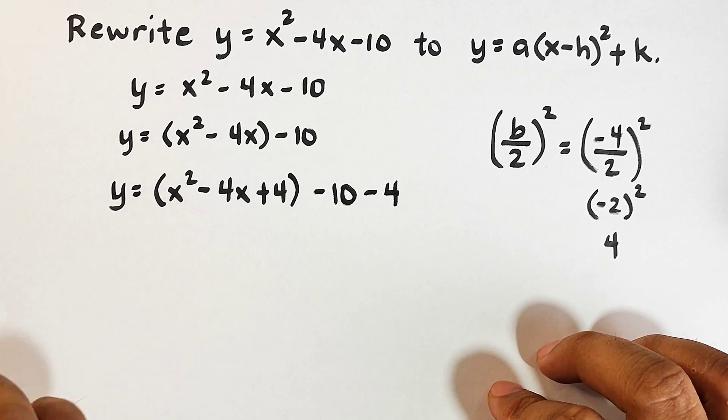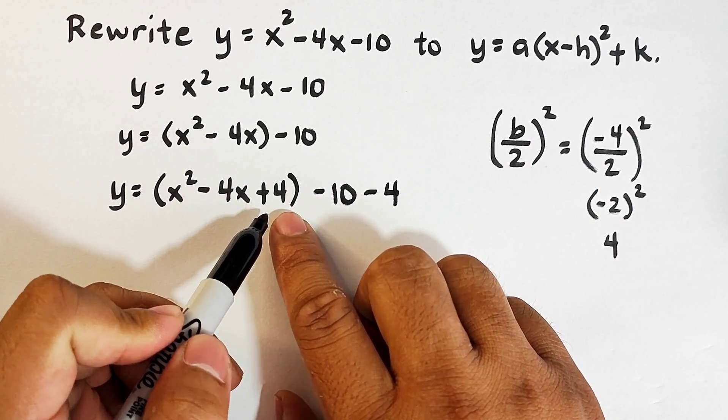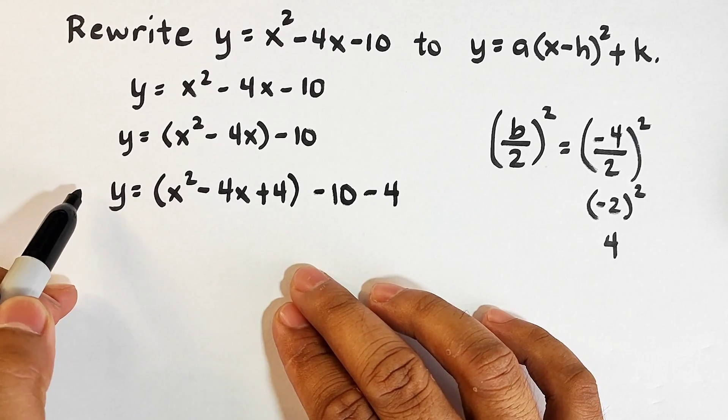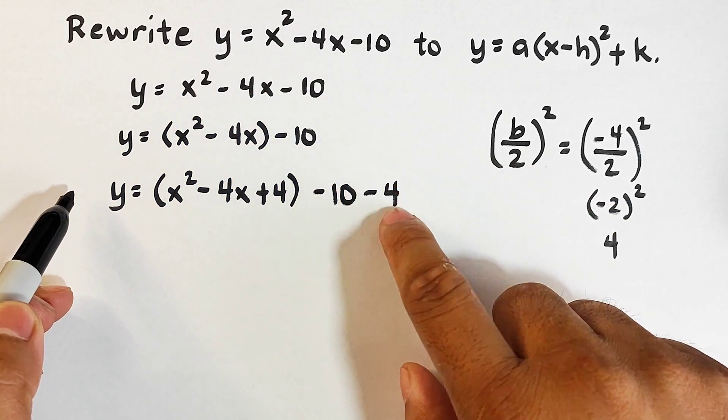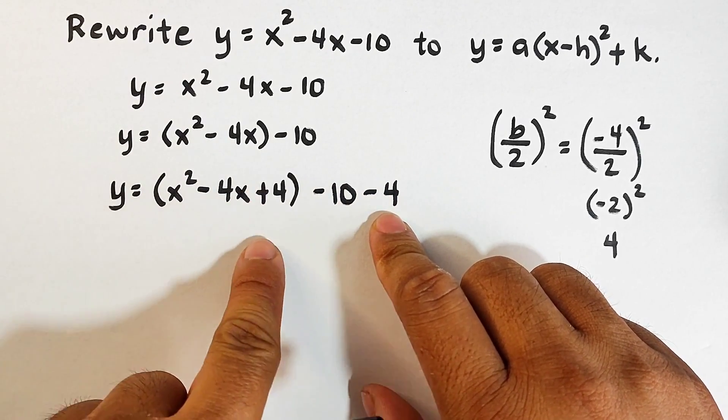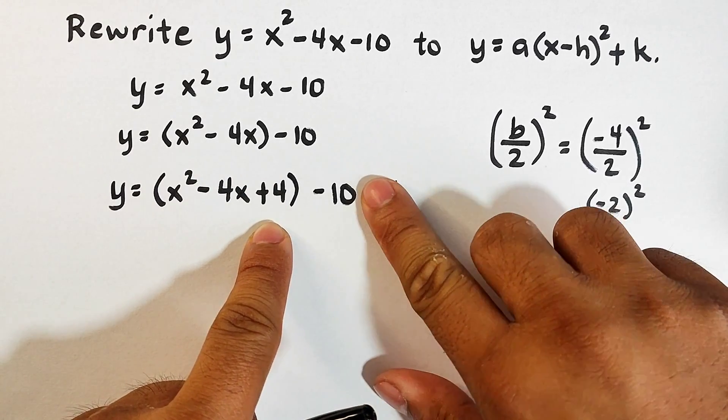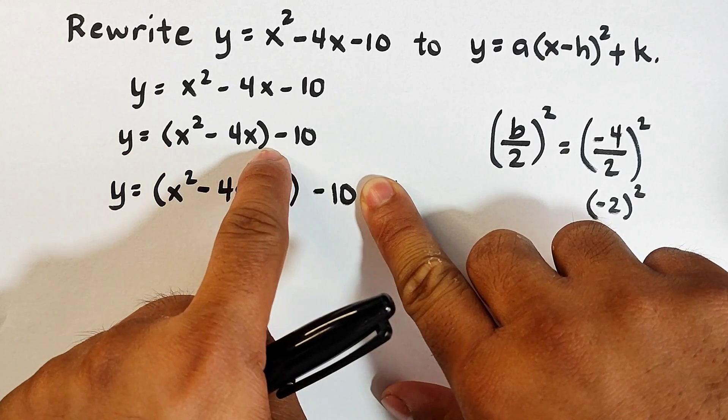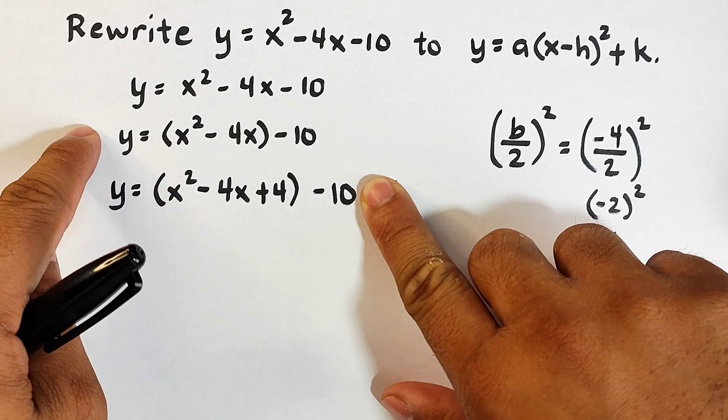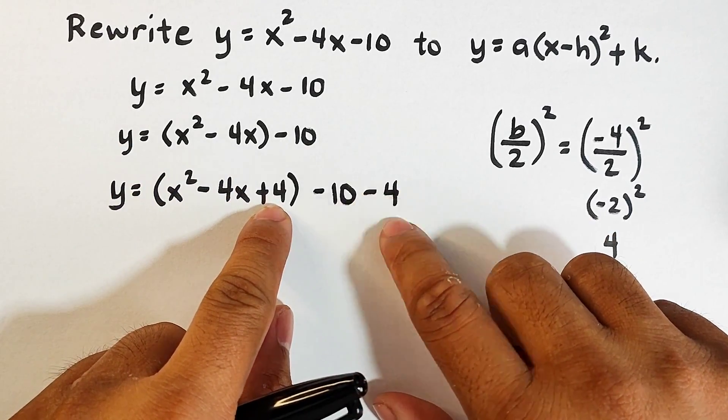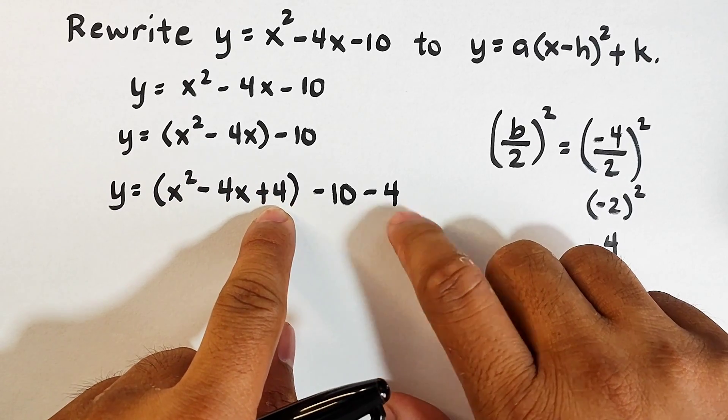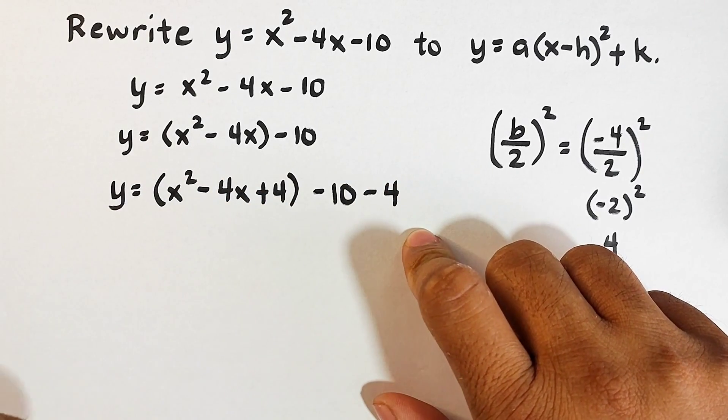So let me explain bakit meron tayo ditong minus 4. Remember, kapag tayo nagko-complete din the square, di ba nag-add tayo na 4? So for example, 4. Sa right side, dapat meron din tayo plus 4 on the left side. But pag nalipat natin dito yung plus 4 sa kabila, it will become negative 4. That's why meron tayo ditong negative 4. And another reason bakit meron tayo minus 4 dito, kasi to negate this plus 4. Kasi pag magpa-plus 4 lang tayo, so for example, from this equation into this equation, this equation or this function is different from this function kapag plus 4 lang. Kapag meron tayong plus minus 4 here, parang nag-add tayo ng 0 lang. Kasi 4 minus 4 is 0. And this function is the same as this function.